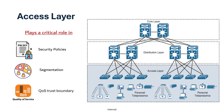Communication between endpoints on different access layer switches occurs through the distribution layer switches. As you can see, there is no direct connection between access layer switches — any communication has to go through the distribution layer. To prevent service outages, it is recommended to use access switches with a redundant supervisor engine, since traffic must traverse the distribution layer, making local redundancy important.